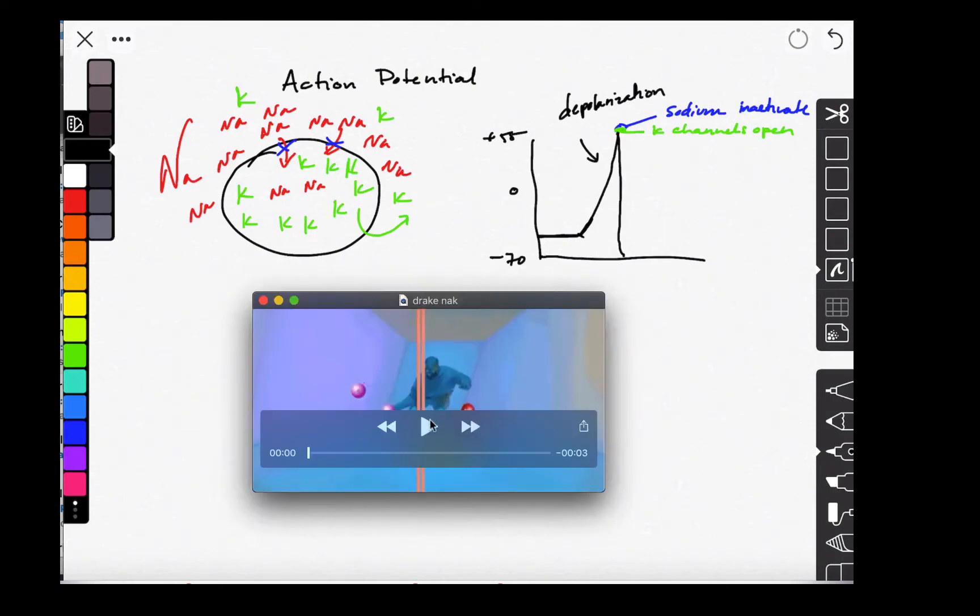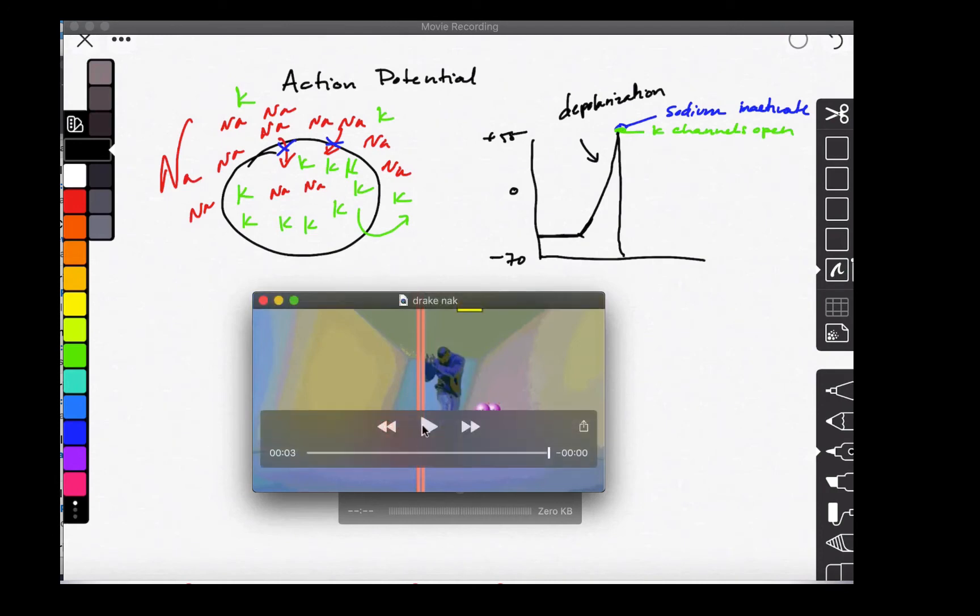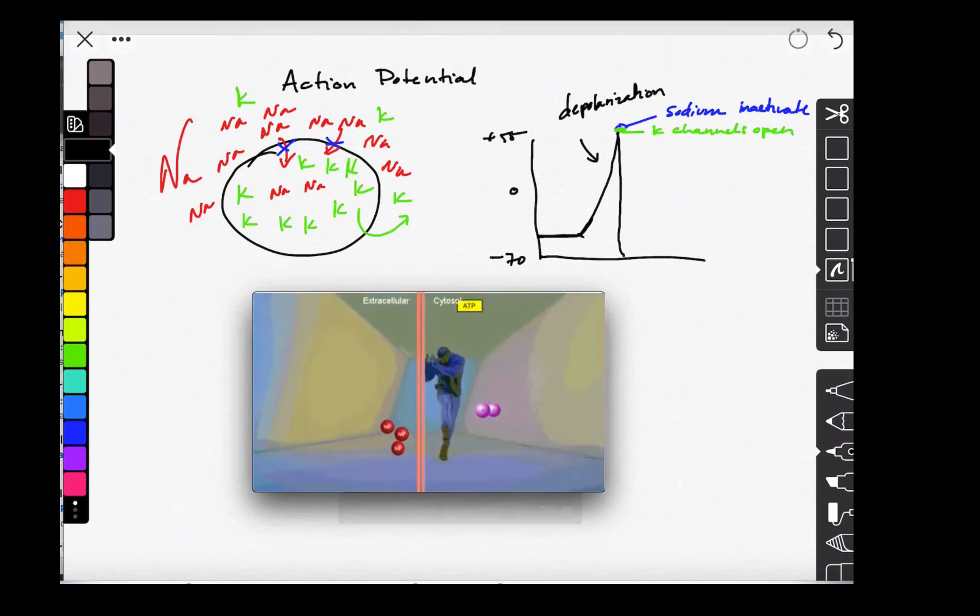And that player is the sodium-potassium pump. The sodium-potassium pump moves three sodium outside for every two potassium it moves inside. And that comes at the cost of ATP.